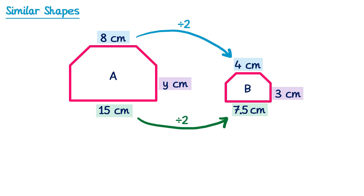To find Y I need to go in the other direction, from 3 back to Y. Since I'm going in the opposite direction I'll use the inverse operation — instead of dividing by 2 I'll multiply by 2. 3 multiplied by 2 is 6, so the value of Y is 6.